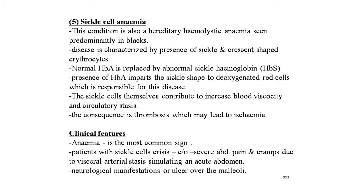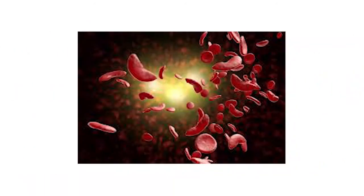The fifth condition requiring splenectomy is sickle cell anemia — a hereditary hemolytic anemia seen predominantly in Black patients. The disease is characterized by sickle and crescent-shaped erythrocytes. Normal HbA is replaced by abnormal sickle hemoglobin (HbS). The presence of HbS imparts the sickle shape to deoxygenated red cells. Sickle cells contribute to increased blood viscosity and circulatory stasis, with thrombosis that may lead to ischemia. Clinical features include anemia as the most common sign, and patients complain of severe abdominal pain during crises.